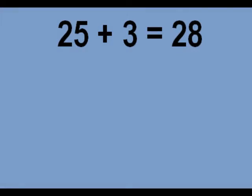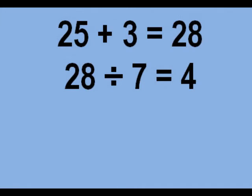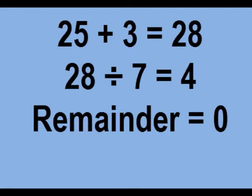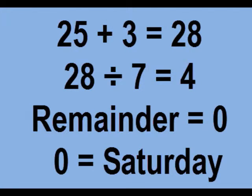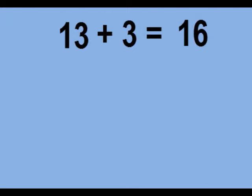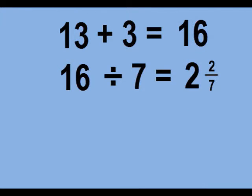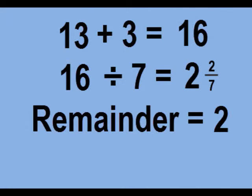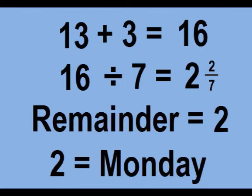3 is the key number for this month. 25 plus 3 is 28. Divide by 7 is 4 — we don't care about the 4, we care about the remainder of 0. If it's a 0, the 25th is a Saturday. Let's try another: the 13th plus 3 is 16. Divided by 7 is 2 and 2 sevenths. That remainder of 2 tells us the 13th is on a Monday.